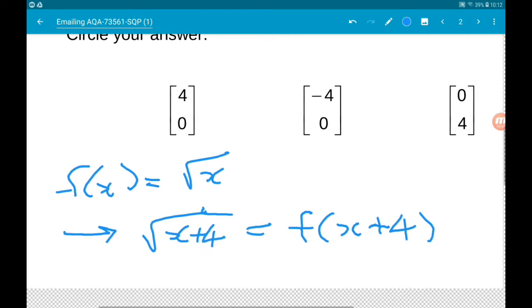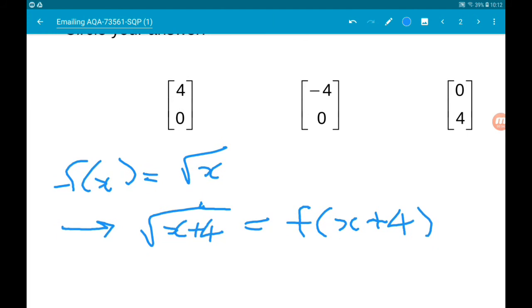This gives a translation four places left. So the vector for that is going to be [-4, 0].